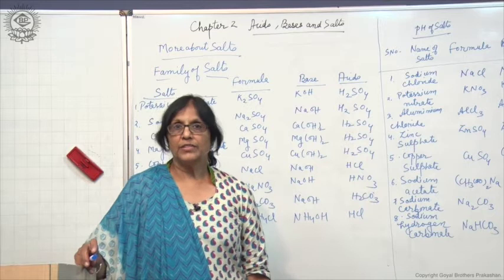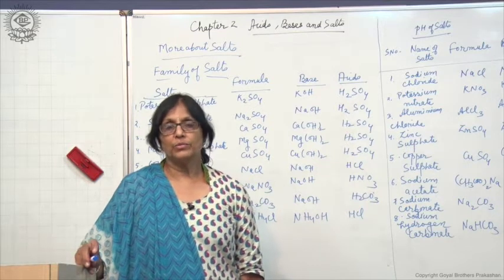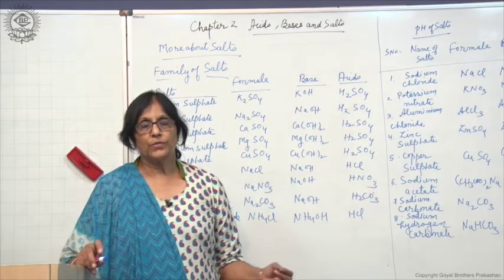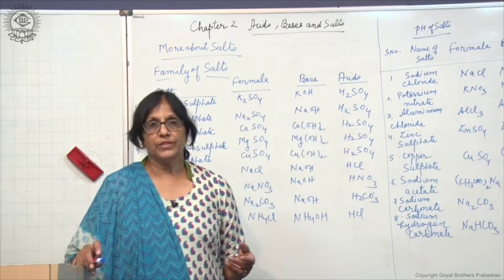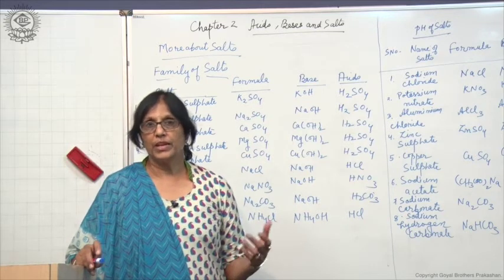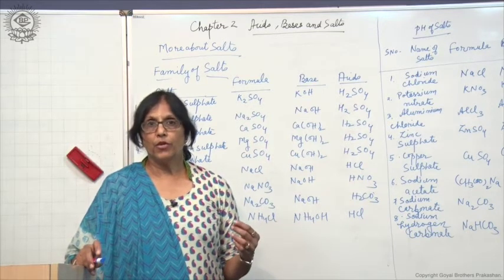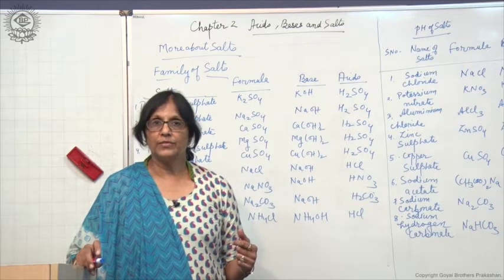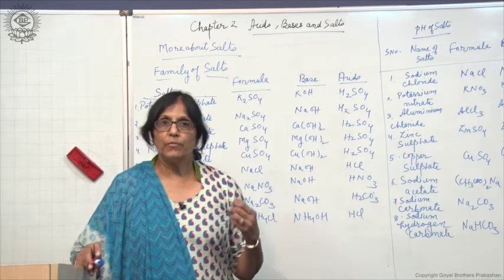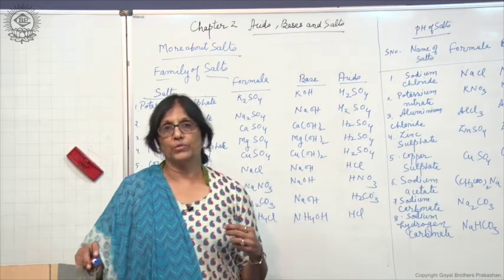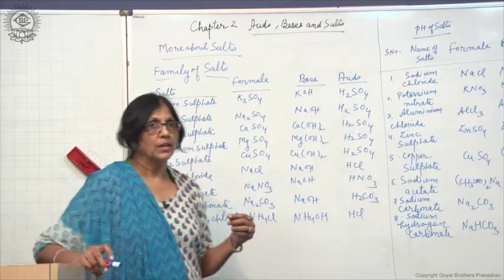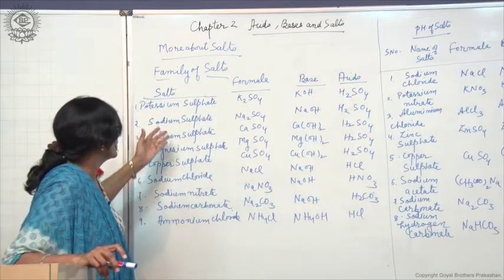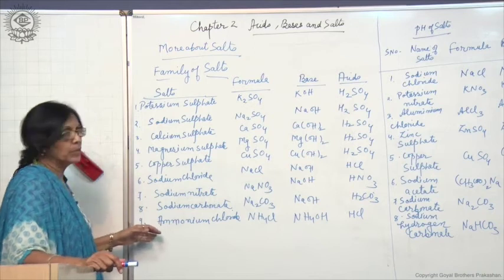An activity can be performed by you all. A list of salts is given to make a table — write the formula of the various salts and also identify from which acid or base each salt is formed. Here, the results of certain salts have been tabulated.